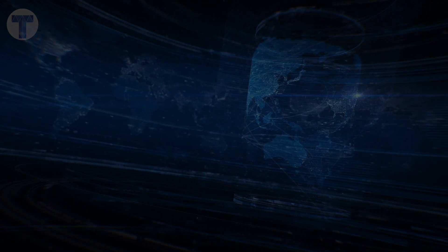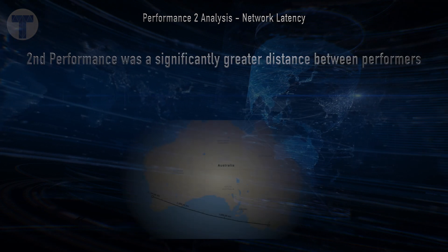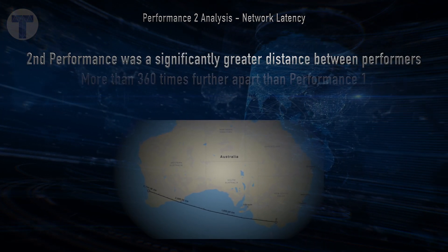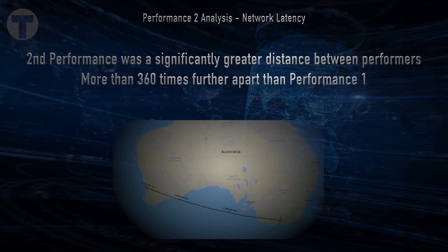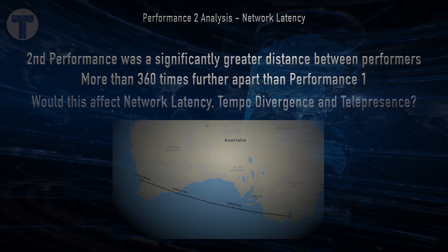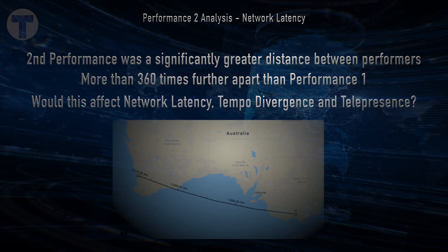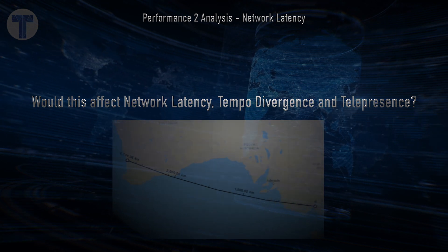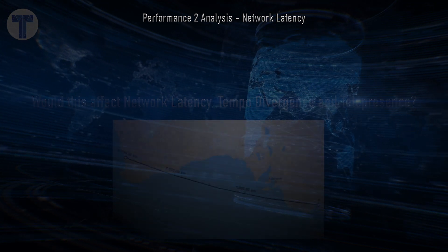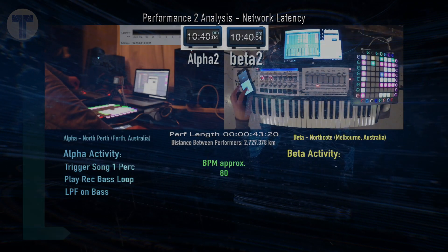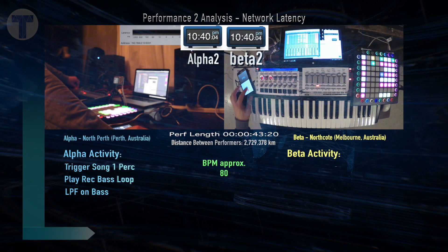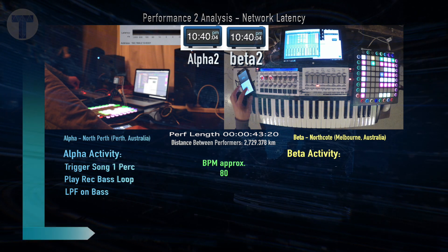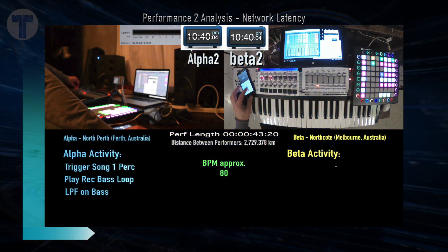Before we look at the network latency in Performance 2, we need to acknowledge there was a significantly greater distance between performers here — more than 360 times further apart than Performance 1. How would this affect network latency, tempo divergence, and telepresence? In the same fashion as Performance 1, we will listen to the Alpha audio and watch the keyboard playing of Beta to identify latency.